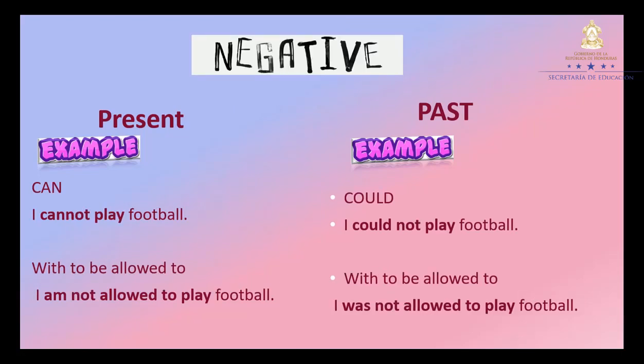Now let's see negative form. In the present with can: 'I cannot play football.' With 'to be allowed to': 'I am not allowed to play football.' In the past with could: 'I could not play football.' With 'to be allowed to': 'I was not allowed to play football.' Repeat: I cannot play football. I am not allowed to play football. I could not play football. I was not allowed to play football. Good job.